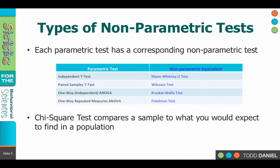For each of the parametric tests that we have learned, there is a non-parametric alternative or equivalent. For instance, the independent samples t-test has a non-parametric equivalent called the Mann-Whitney U test. For paired samples t-test, we could do the Wilcoxon test instead. One-way ANOVA is matched by the Kruskal-Wallis, and a repeated measures ANOVA is matched by Friedman's test. So no matter the parametric test we've learned about, there's another way of doing that test using a non-parametric approach.